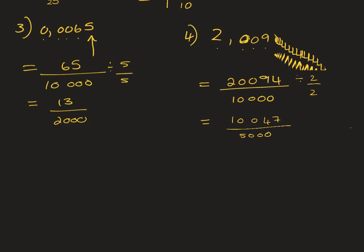If you want to change to a mixed number, you're welcome to — it will be 2 and 47 over 5,000 — but it's really not necessary. If you don't know how to get there, leave it as an improper fraction, not a mixed number.